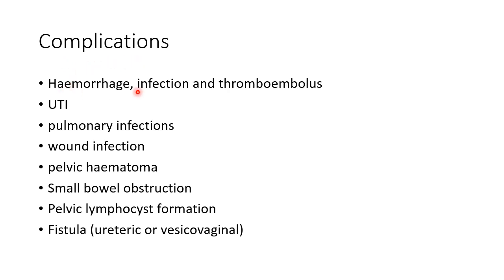Now let us see about the complications of radical hysterectomy. Hemorrhage, infection, and thromboembolism are the major complications. Infections can include urinary tract infections, pulmonary infections, and wound infection. Other complications include pelvic hematoma, small bowel obstruction, pelvic lymphocyst formation, and ureteric or vesicovaginal fistula.